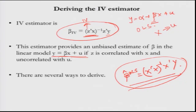The IV estimator provides an unbiased estimate of beta in the linear model y = βx + u if z is correlated with x — so we want the z'x term to be non-zero — and uncorrelated with u, meaning z and u must be uncorrelated. There are several ways to understand the derivation of this estimator.